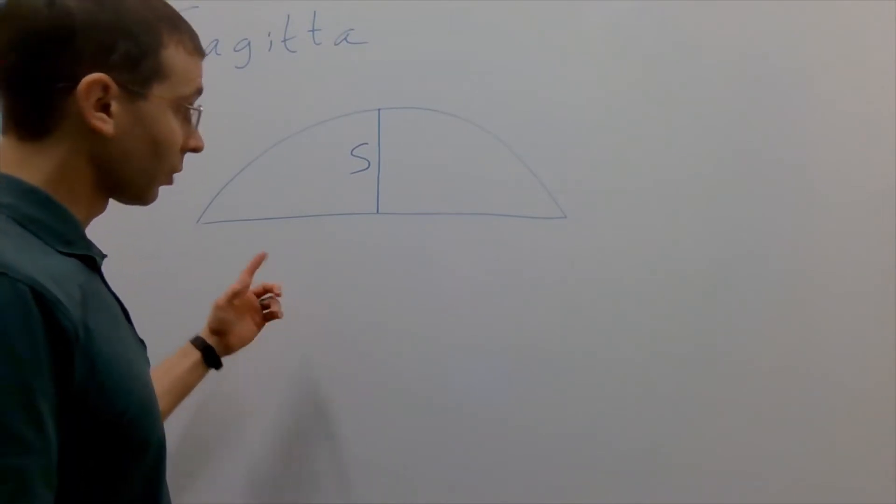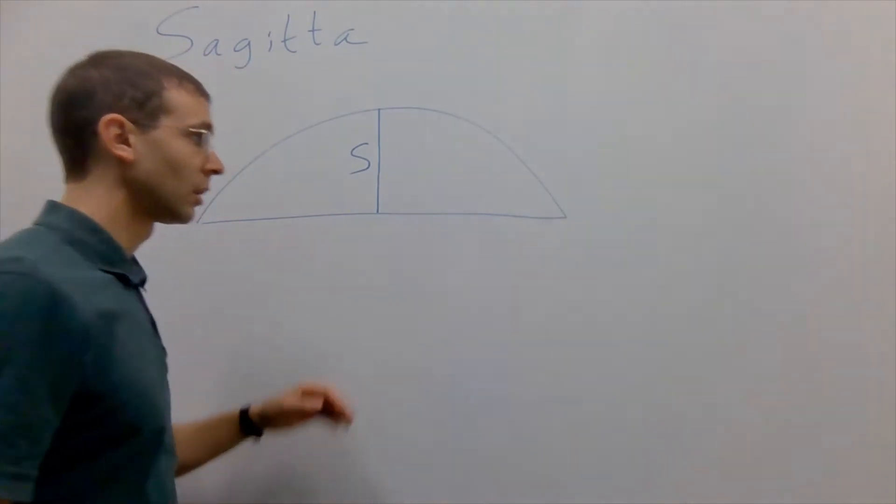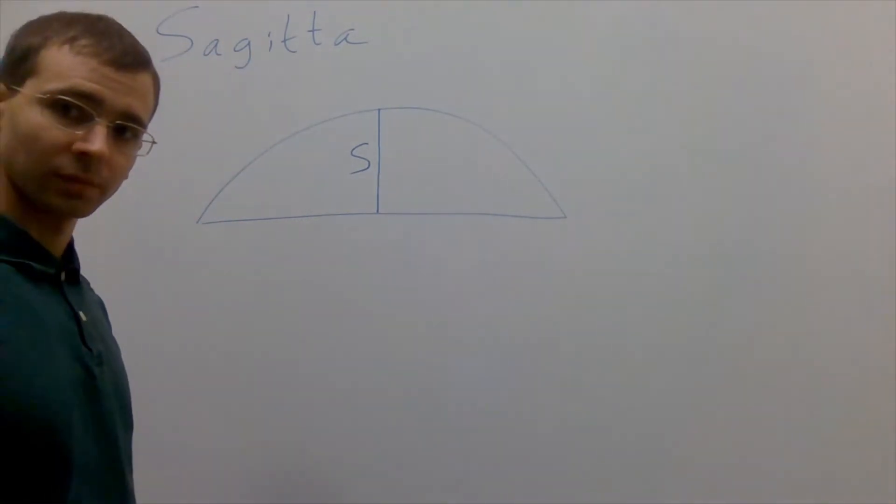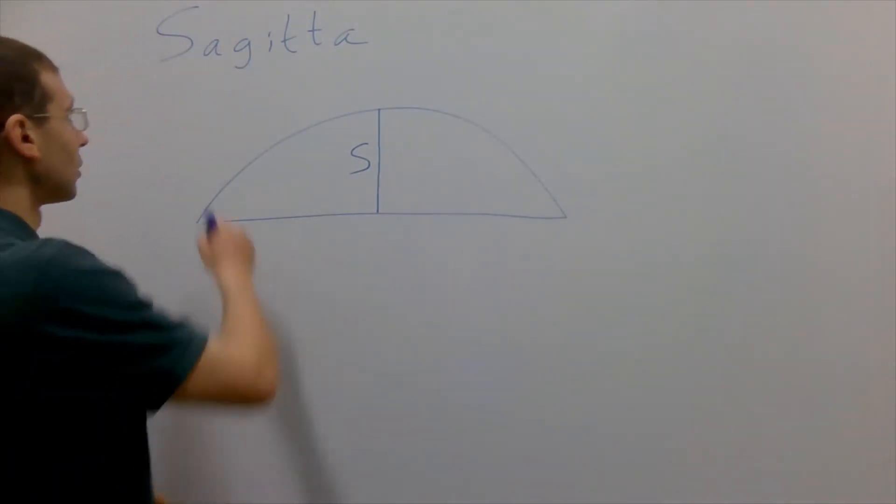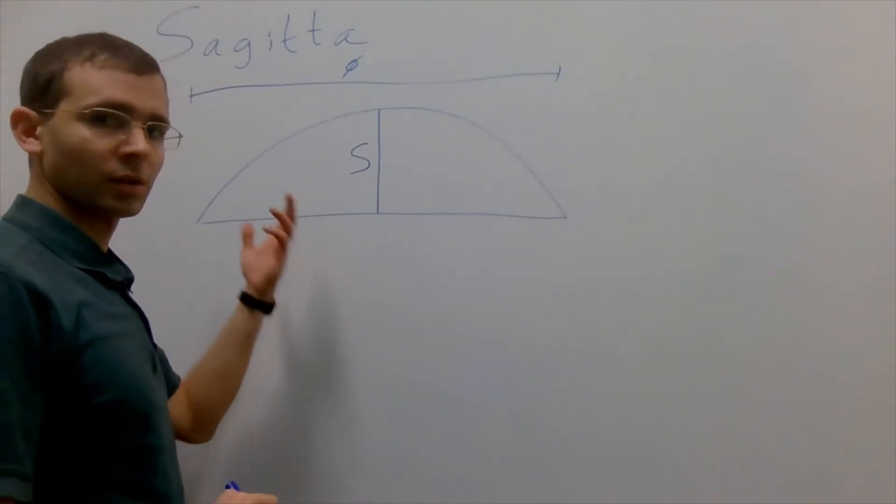Often we want to relate the radius of our circle, the length of this chord, and SAG. To do that, let's name our parts and do a little bit of algebra. We'll use this symbol here for the length of the chord.